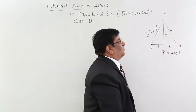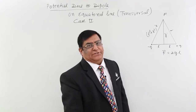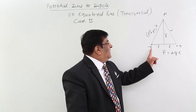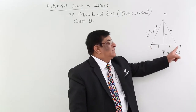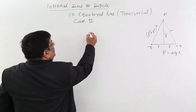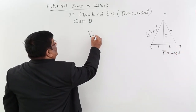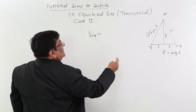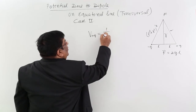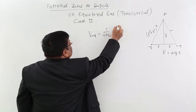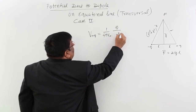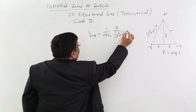Now we will find the potential. We know the formula of potential only due to a point charge. The potential created by the positive charge at point M is: V due to plus Q = (1 / 4πε₀) × Q / √(R² + L²).